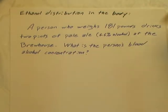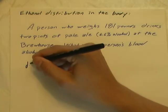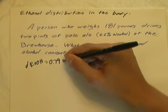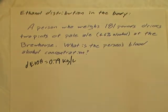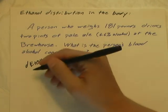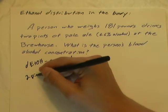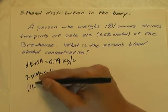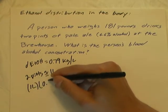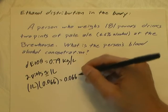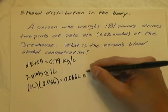First, we need to know that the density of alcohol is 0.79 kilograms per liter. To find the mass of ethanol consumed: 2 pints is approximately equal to 1 liter. So 1 liter of total volume times 6.6% alcohol content equals 0.66 liters, or 66 milliliters of ethanol.